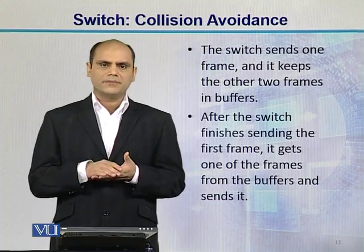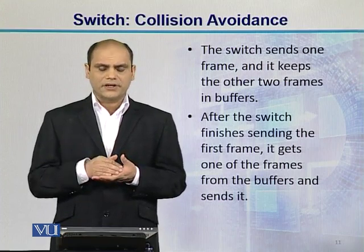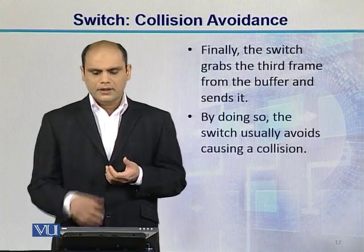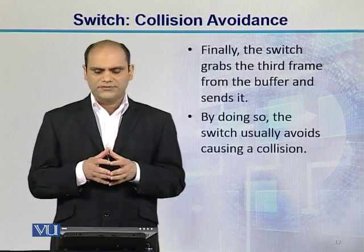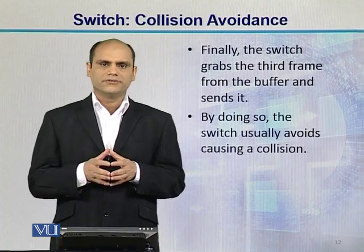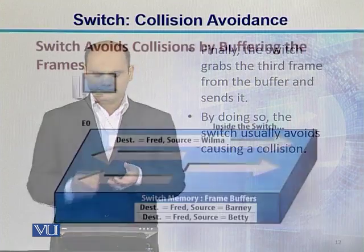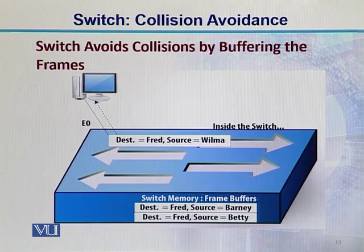The remaining frames are buffered. After the switch finishes sending the first frame, it takes the next frame from the buffer and transmits it. Finally, it grabs the third frame from the buffer and sends it to Fred. By doing so, the switch can avoid collisions. This diagram shows that E0 is the port where Fred is connected, and Wilma, Betty, and Barney send their frames simultaneously — the switch then queues them.